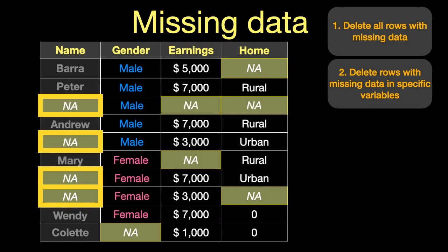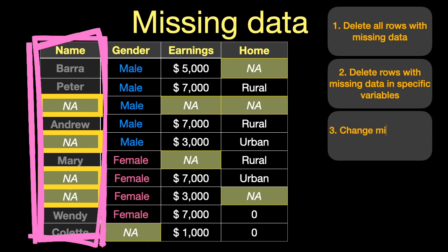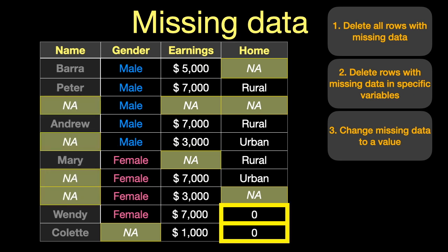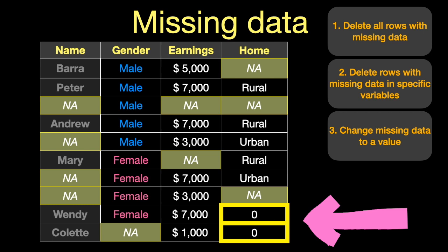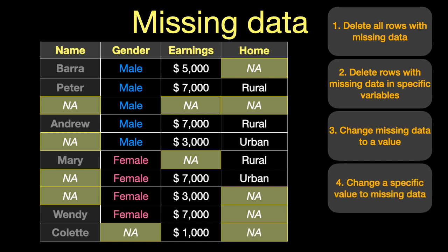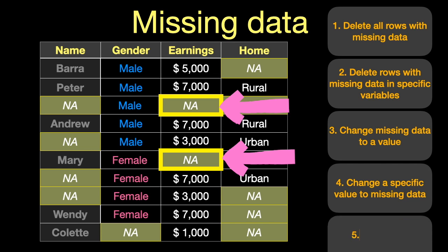Something else you can do is delete just the rows where there is missing data from a specific variable. If you look at the names variable, we don't care too much that the actual names are missing because we're not going to analyze the data by individual names. So our third strategy is we might want to change missing values in a particular variable to something else — we've changed them to 'unknown'. Or we might have the exact opposite problem: there is data that is actually missing but hasn't been identified as missing. In this case we've got zeros instead of missing, so our fourth strategy is we can change values in a variable into missing data — those zeros have been changed into NA. And finally, we might want to replace missing values with our best guess as to what that value should be. This is called imputation.